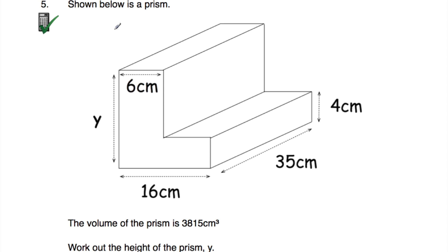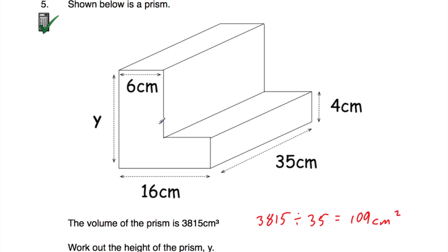Let's look at question number five. Shown below is a prism, and we're told the volume of the prism is 3,815 centimetres cubed. We need to work out the height of the prism, y. When we find the volume of a prism, we multiply the area of the cross-section by the length. So if we take the volume and divide by the length of 35, we get the area of the cross-section: 3,815 divided by 35 is equal to 109 centimetres squared. We know this part is 6 and the height is y, so the area of this part is 6y.